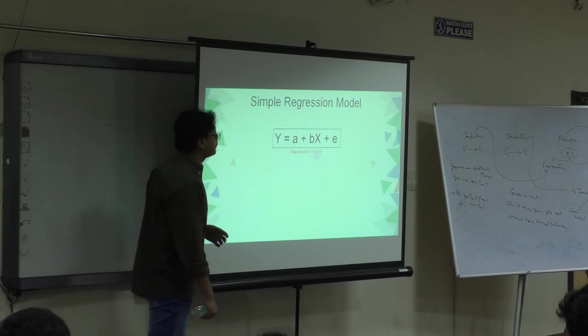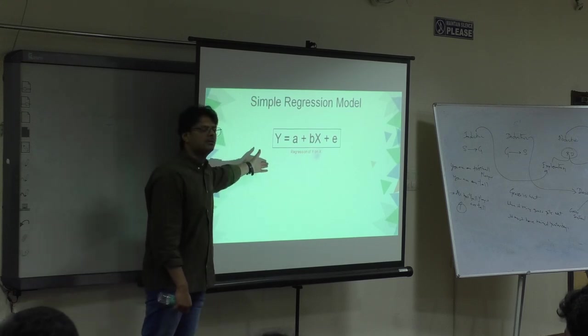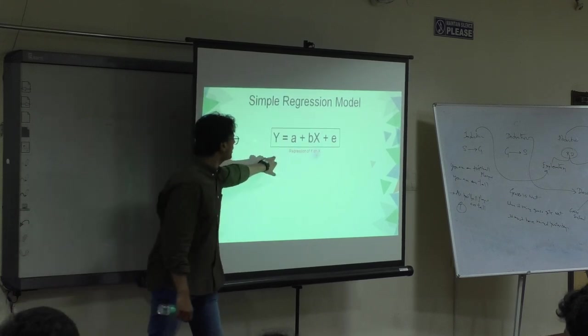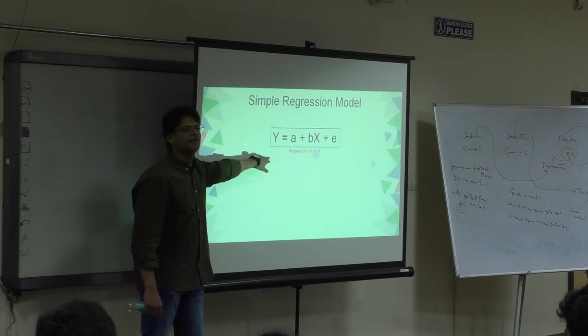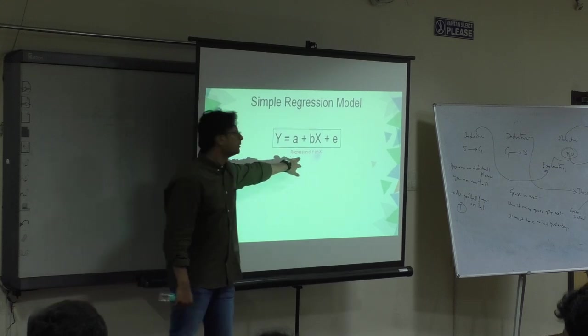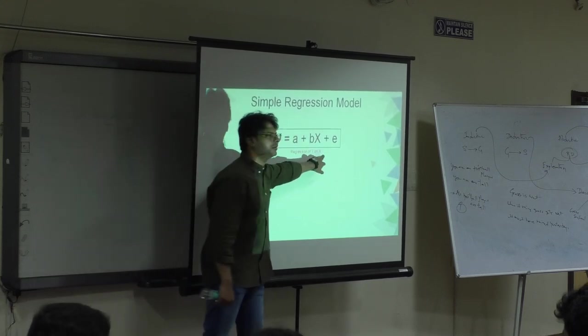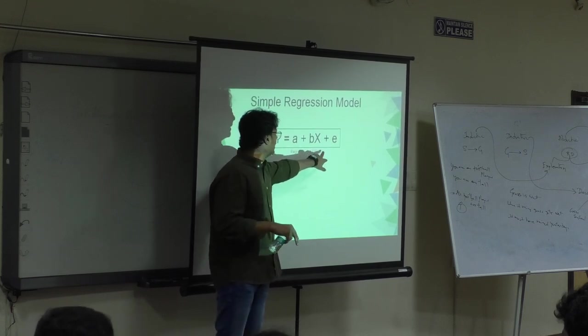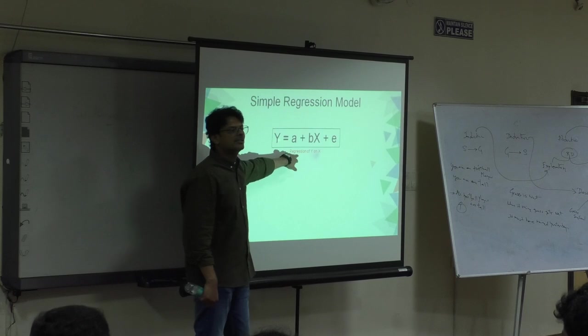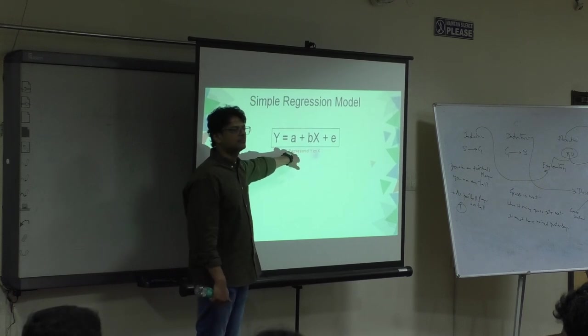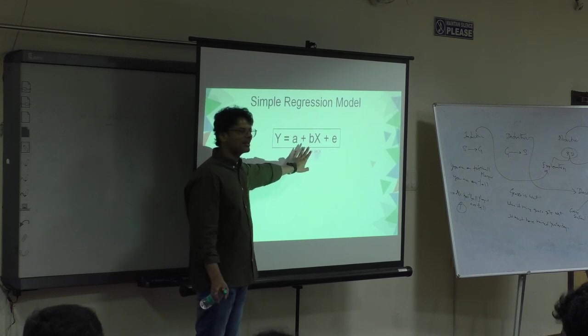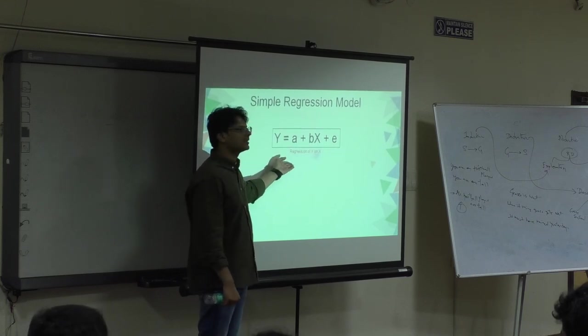So here I have taken regression of Y on X. What does Y on X mean? This line here. What does this mean? X is the independent variable, Y is the dependent variable. Y is dependent on the value of X. If you look at this equation you will understand what it is.